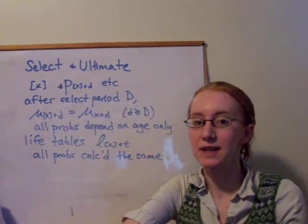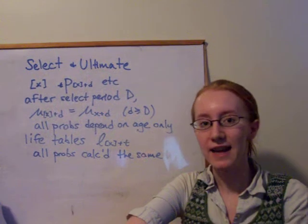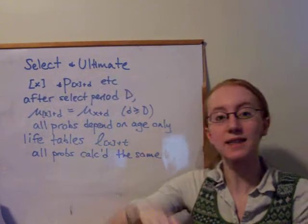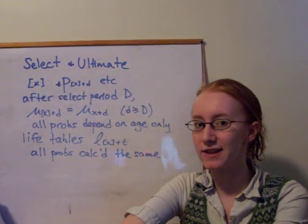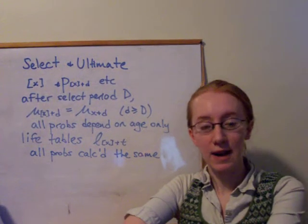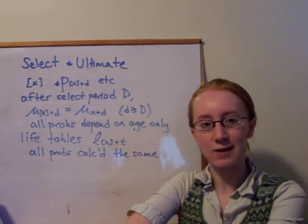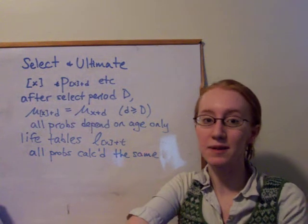and we've left the select period and gone into the ultimate part of the table, then these L's will just be the same as the L's in a normal life table. They'd just be L x plus t, no square brackets at all. And there's a number, a couple of different formats of looking at those select and ultimate life tables. There are examples on the course website.